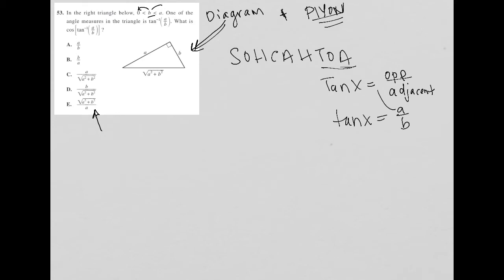So if I have tan x equals A over B, that means A is the opposite and B is the adjacent. So that would mean we are here, this angle right here, because that makes A opposite and B adjacent. And of course, we find the angle by saying x equals tan inverse of A over B, which is what the question said. So at least now, this tells me I'm dealing with this angle right here.